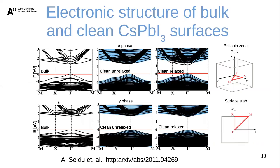We then looked at the band structures. We used a larger slab model to rule out quantum confinement. The band structure is projected onto the bulk, and the clean unrelaxed surface is perfectly aligned to the bulk. After relaxation, however, we see surface states in the alpha phase — the edge of the conduction band is pulled into the gap. In the gamma phase, no such surface states appear, and the band gap of the gamma phase is wider. This is the Brillouin zone used for our calculations.